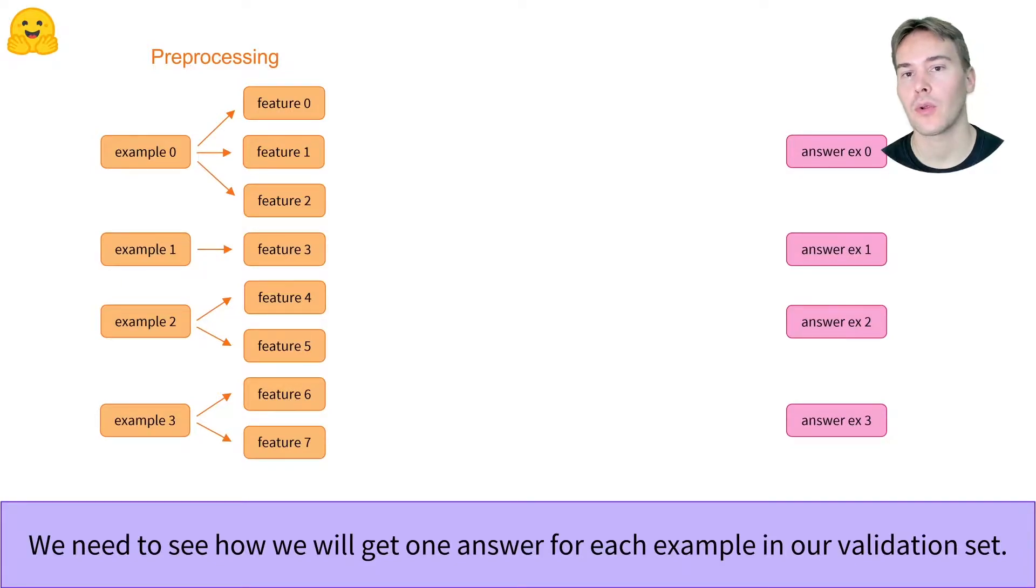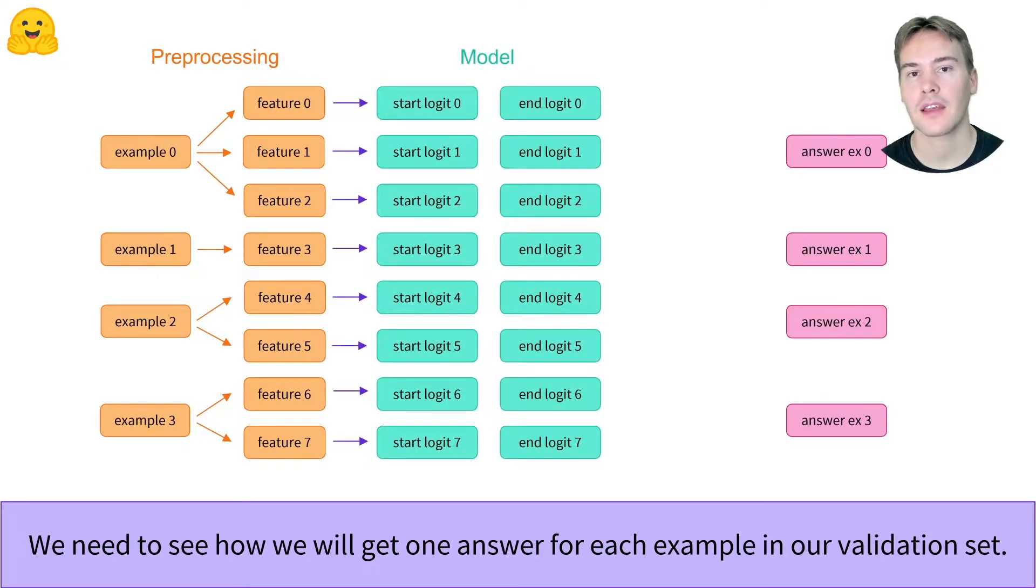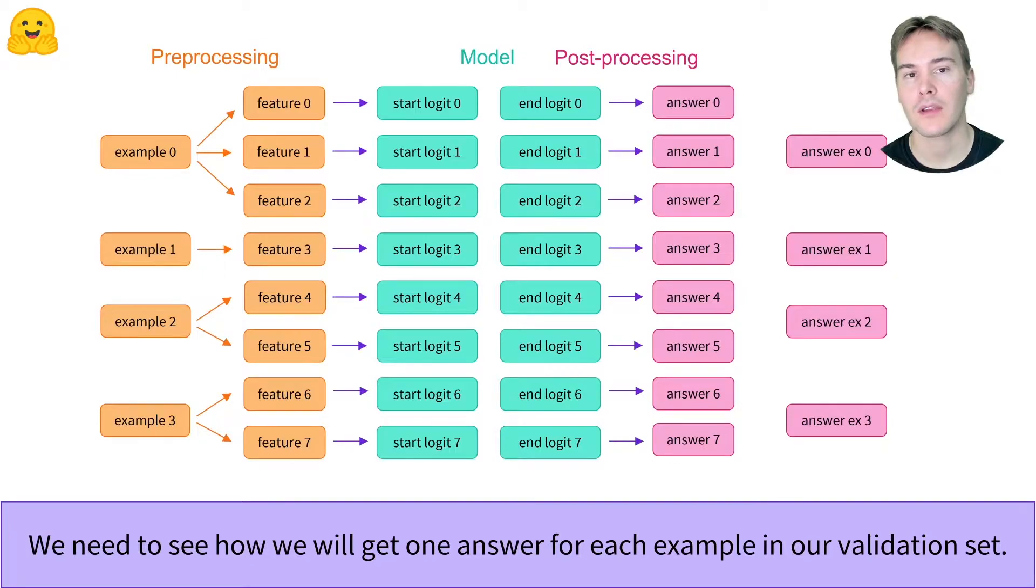Passing those features through the model will give us logits for the start and end positions, since our labels are the indices of the tokens that correspond to the start and end of the answer. We must then somehow convert those logits into an answer, and then pick one of the various answers each feature gives to be the answer for a given example.